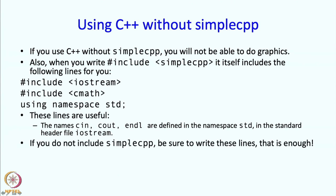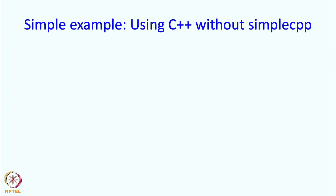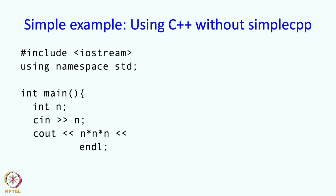So if you do not include simple.cpp, you should have all these lines — iostream, using namespace std, and cmath — because if you want to use functions like square root, sin, abs, and so on, you need cmath. Let me give a very simple example: you might write '#include <iostream>', 'using namespace std', 'int main', read n with cin, and print out its cube. This is a simple program you can write without using the simple.cpp features.